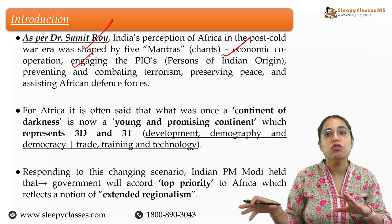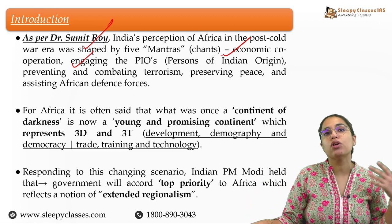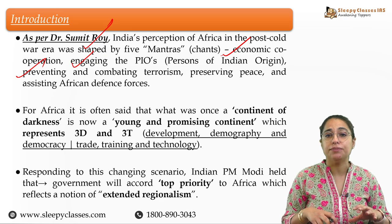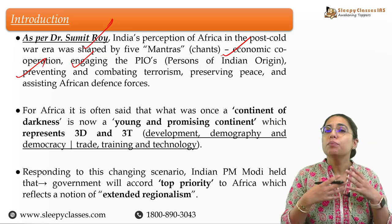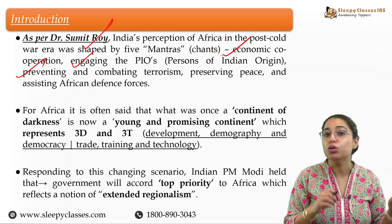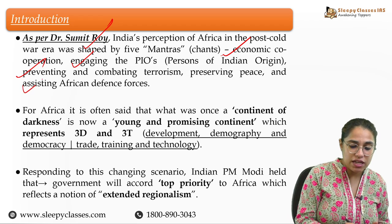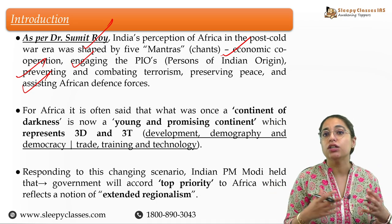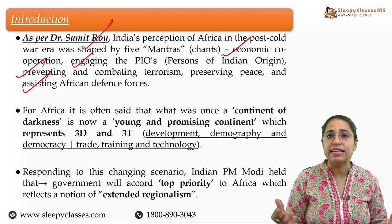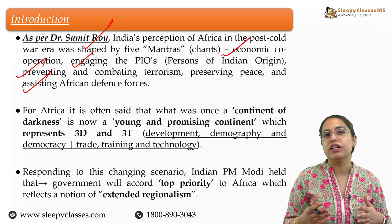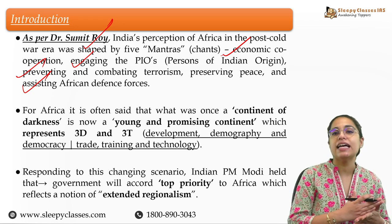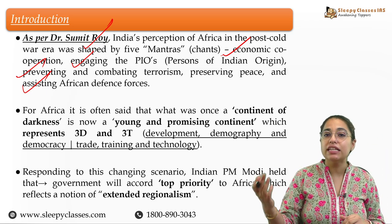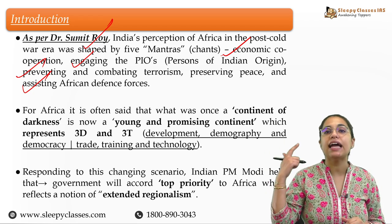Africa, which was once called the Continent of Darkness, today holds a lot of potential realized by all countries of the world. Africa is now said to represent the three D's and three T's — the three D's being development, demography, and democracy; the three T's through which these can be leveraged being trade, training, and technology. Because of this, India and especially the present government has given top priority to Africa in the notion of extended regionalism — India's specific geography, beyond just neighbors, extended regionalism, because India and Africa have past relations, historical trade, and cultural interactions.